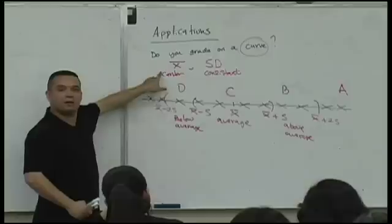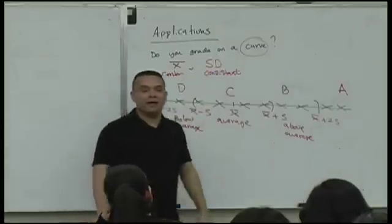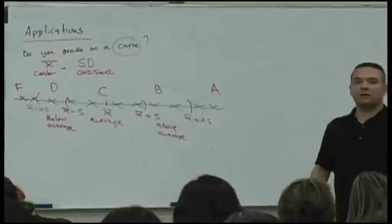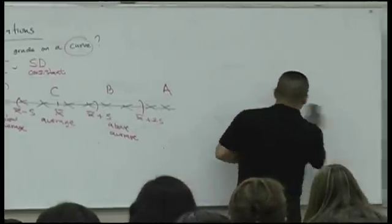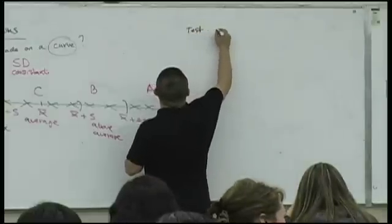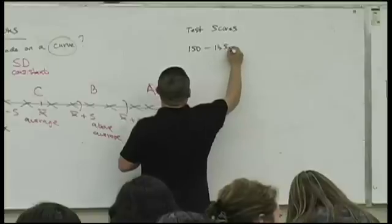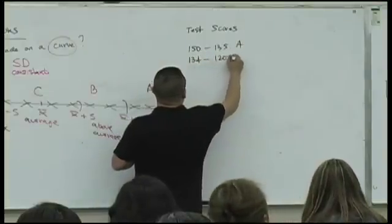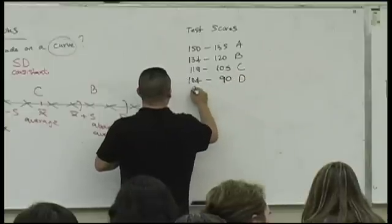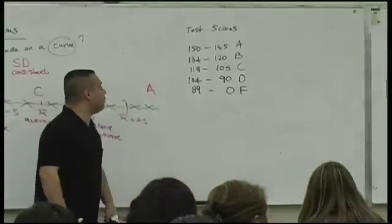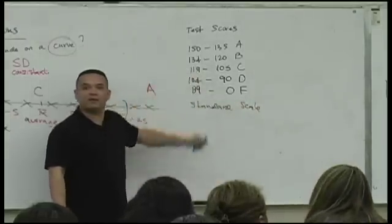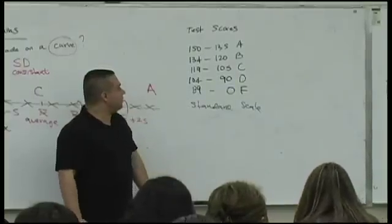The curve scale depends on the center of your data and how consistent it is. Now, for comparison, the standard scale for 150 points is: 150–135 is an A, 134–120 is a B, 119–105 is a C, 104–90 is a D, and 89–0 is an F. This is the regular 90/80/70/60 percentage-of-total-points scale.